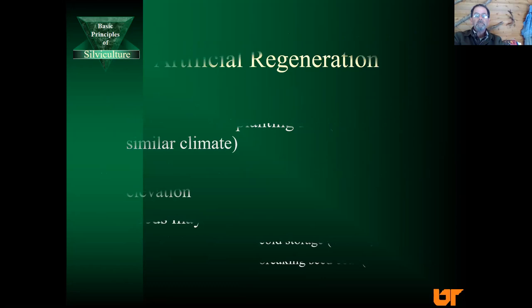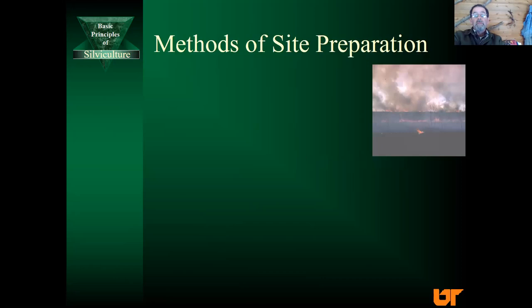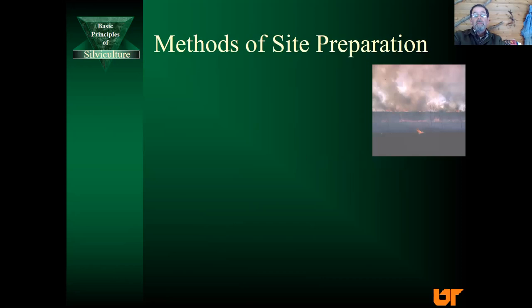Site preparation for regeneration means manipulating the establishment site to improve the overall survival of seedlings — controlling vegetation, the slash, maybe subsoiling if the soil is compacted, and liming or fertilizing. It's good to conduct a soil test before you plant trees to see if there's a deficiency. Fire can sometimes be used to expose the mineral soil, particularly if you're relying on natural regeneration with adjacent seed trees nearby as a seed source. This is more common with pine. Fire does improve access for planting too, making it easier to plant.